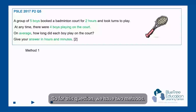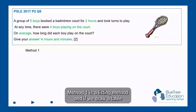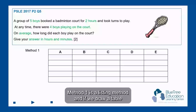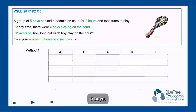So for this question we have two methods. Method one is a listing method in which we draw a table and we have each boy represented by a letter: A, B, C, D, and E. Five letters, five boys.